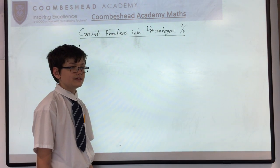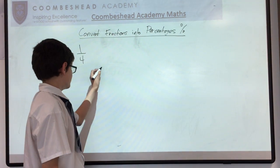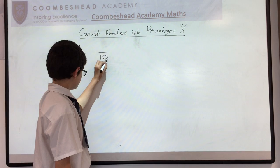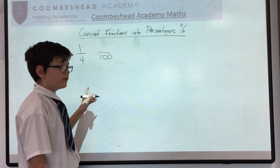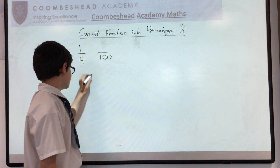So the easiest way to picture this is picture it out of 100. Now to get 4 into 100, you have to times it by 25.